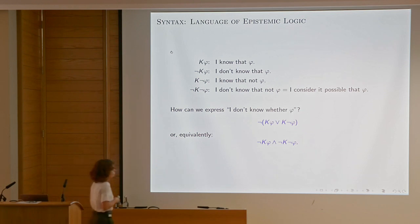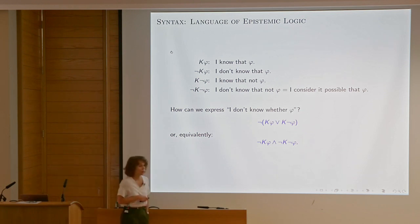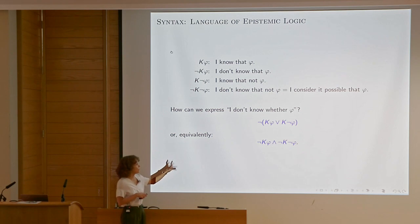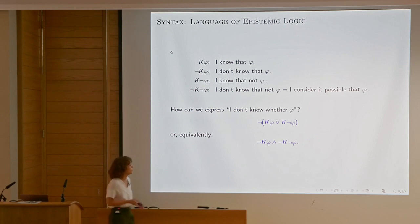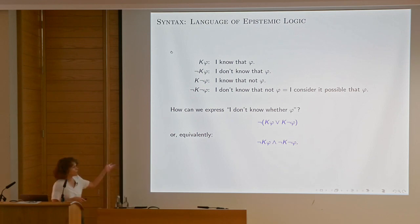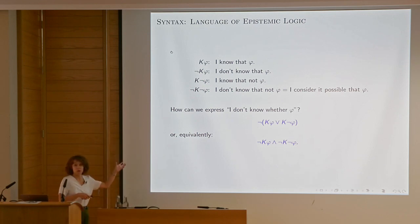Equivalently, you could say: I don't know that φ and I don't know that not-φ. This basically tells you that my attitude towards φ is not specified — it's not a rigid attitude. It's possible, but I don't know. Those are the basic components of the language intuitively.